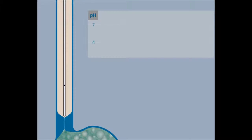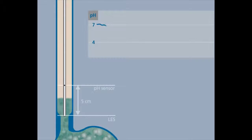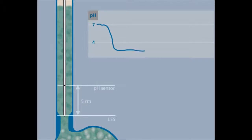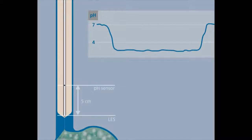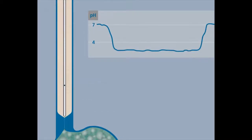Until recently, reflux was detected by measuring the pH in the esophagus. When acidic material enters the esophagus, the pH drops. With pH monitoring, the proximal extent of gastric content cannot be detected. pH studies can only detect acidic reflux episodes. Under acid-secretion-inhibiting medication, most of the reflux episodes are weakly acidic. However, these reflux episodes can also cause symptoms and cannot be detected in pH studies. Now we have a new technique which combines pH and impedance measurements.